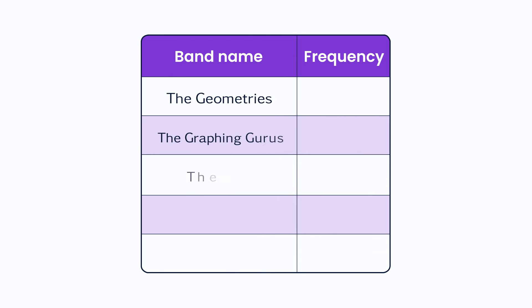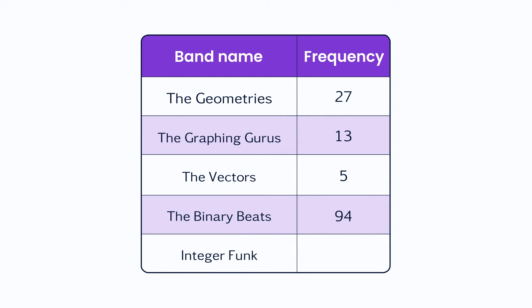Let's look at an example to understand this better. In a survey, students were asked to choose their favorite option from five different band names. The results turned out like this: 27 voted for The Geometries, 13 chose The Graphing Gurus, 5 liked The Vectors, 94 voted for The Binary Beats, and 11 preferred Integer Funk.